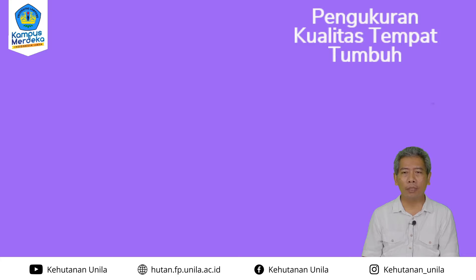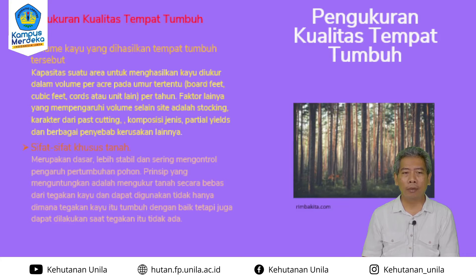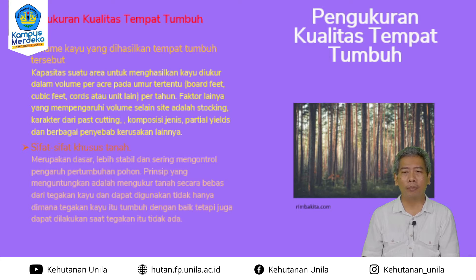Pengukuran kualitas tempat tumbuh bisa dilakukan dengan beberapa cara. Yang pertama dengan melihat volume kayu yang dihasilkan tempat tumbuh tersebut. Biasanya yang diukur adalah kapasitas suatu area untuk menghasilkan kayu yang diukur dalam bentuk volume per hektare pada umur tertentu, bisa juga per tahun. Diukur diameter kemudian tinggi, lalu ditemukan volume — seberapa banyak volume per hektare, bisa juga ditambah per tahun.